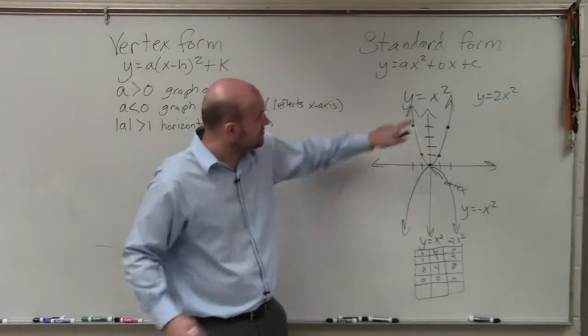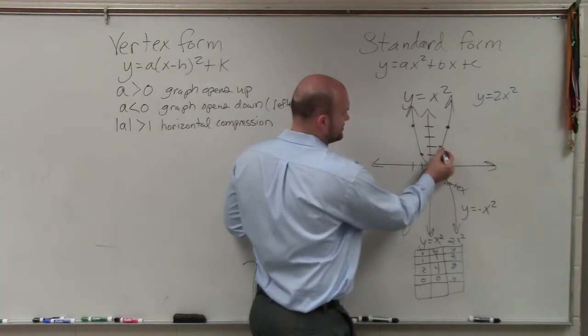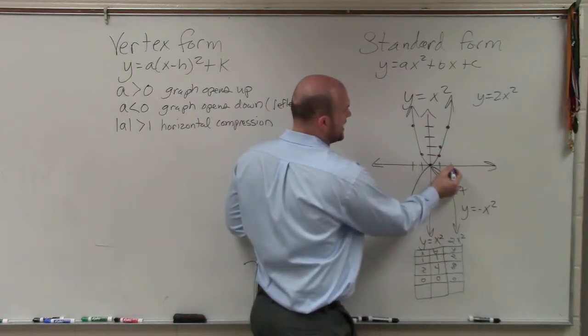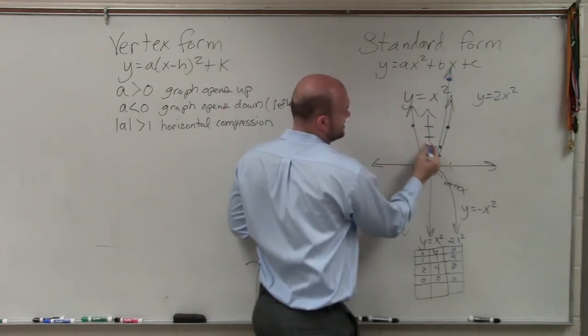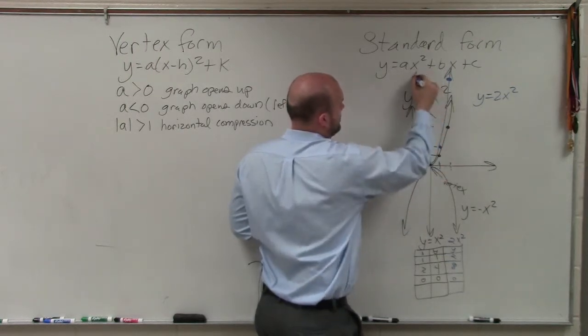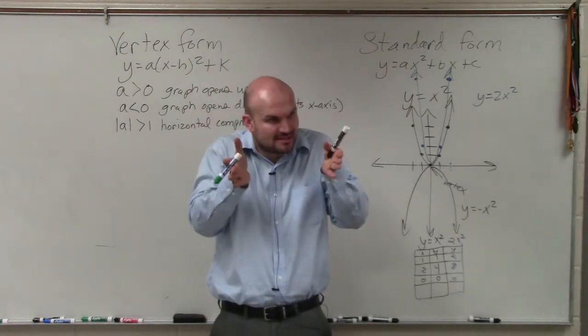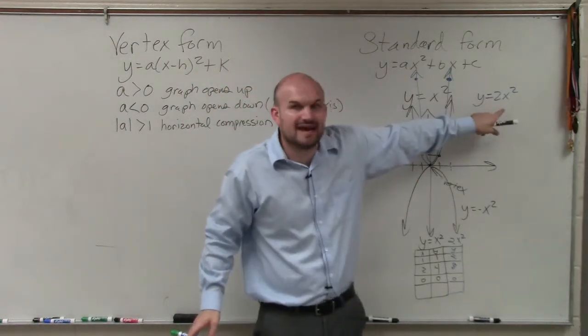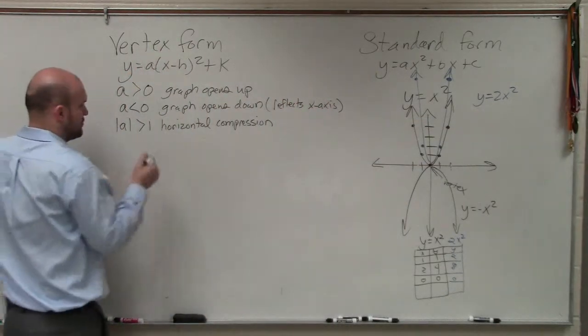So what that means is to graph y equals 2x squared, if I go over 1, I'm now going to go up to 2. If I go over 2, I now go up to 8. And you guys can see reflecting this over, the graph is much skinnier. Do you guys see how it's been compressed? Just because this value of a was larger than 1. And that's going to be true in vertex form as well.